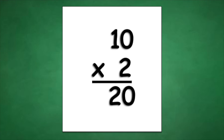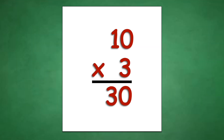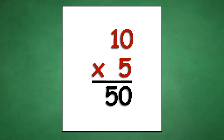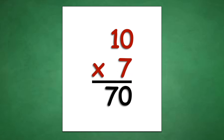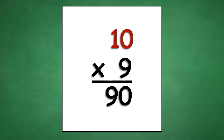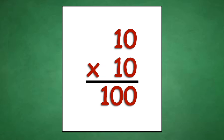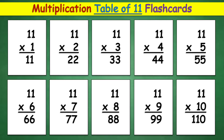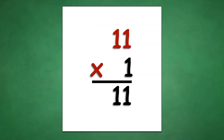Table of 10: 10 times 1 equals 10, 10 times 2 equals 20, 10 times 3 equals 30, 10 times 4 equals 40, 10 times 5 equals 50, 10 times 6 equals 60, 10 times 7 equals 70, 10 times 8 equals 80, 10 times 9 equals 90, 10 times 10 equals 100.